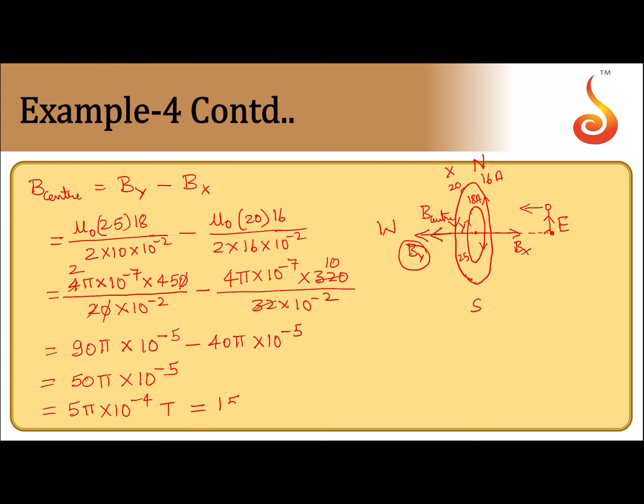So 5 pi into 10 to the power minus 4 tesla. So this is towards west. It is directed towards west direction.